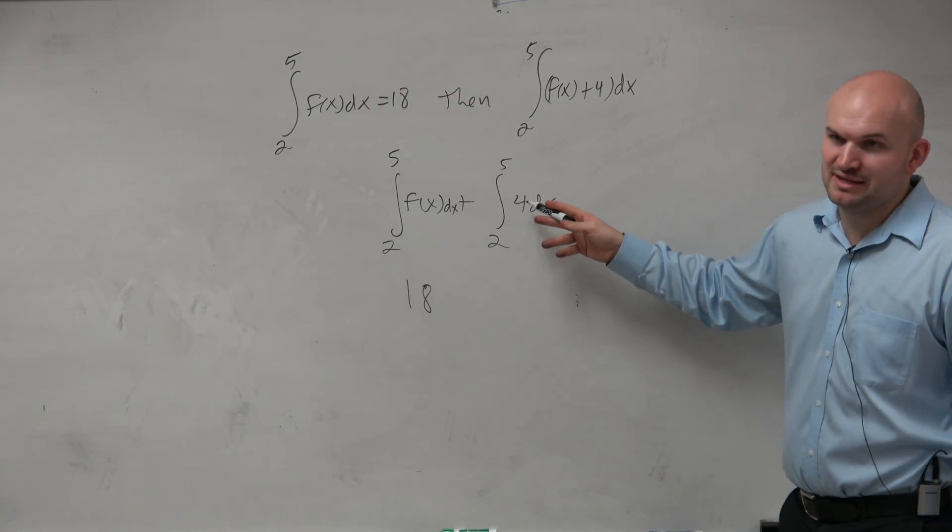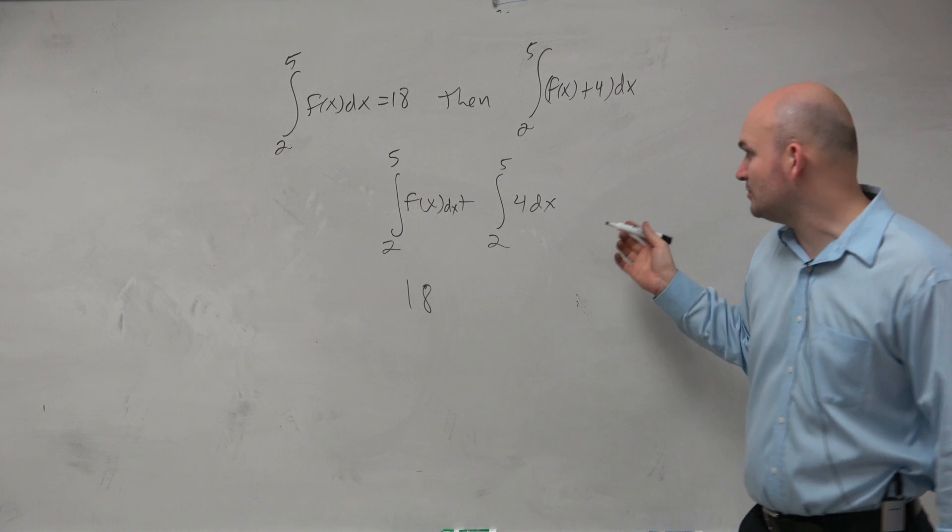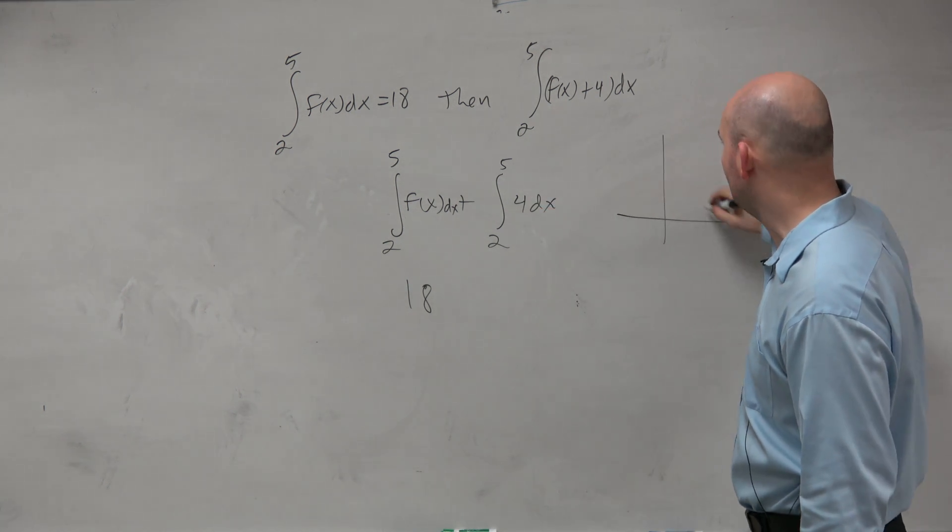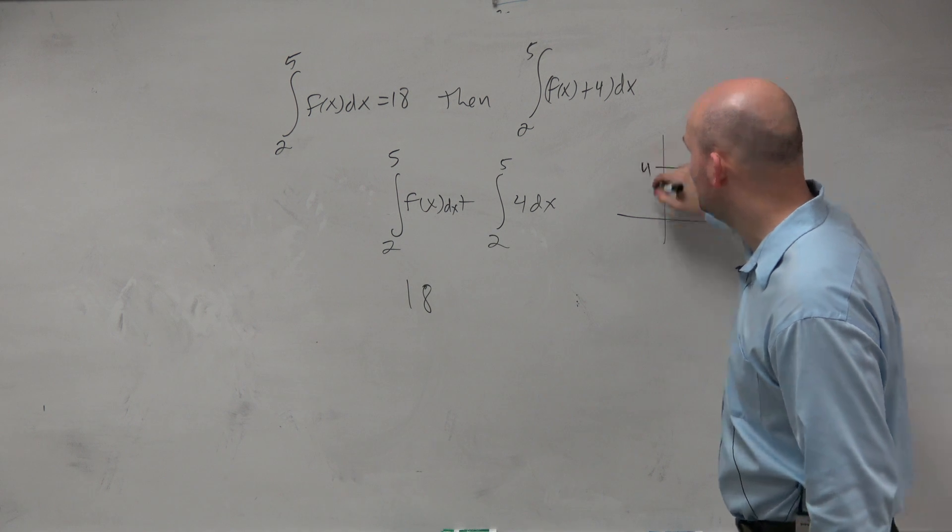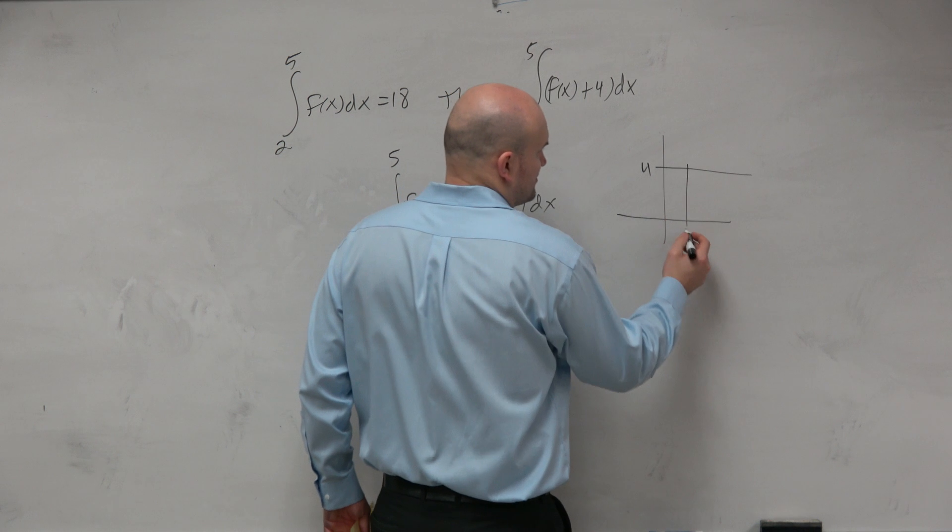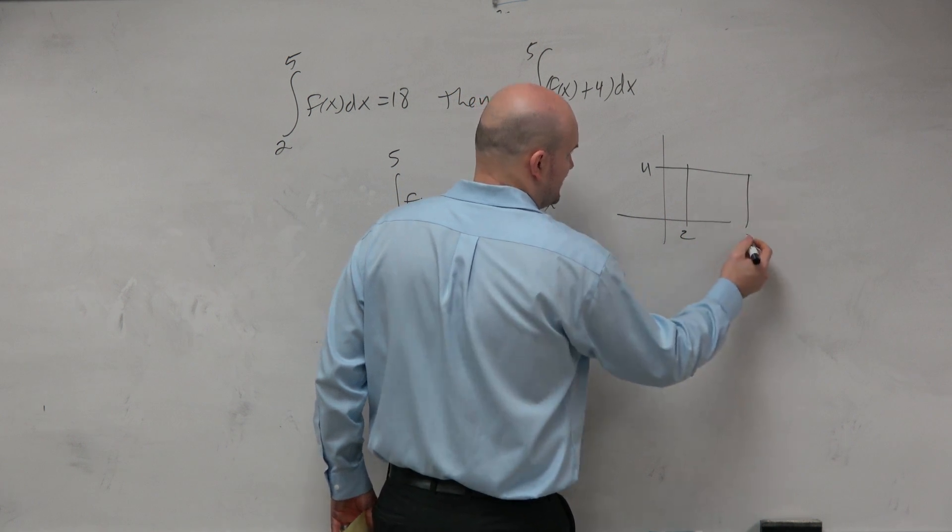why even waste time integrating this, you know, and plugging in the 5, so on and so forth. What is this? This is basically going to be a rectangle again, right, at 4, and then we're evaluating it from where? 5 to 2. From 5 to 2. So what is the base here of that?